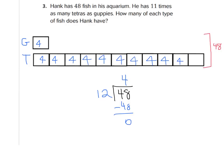And then we can figure out the answer. What is it asking? How many of each type of fish does Hank have? I know he has 4 guppies. And 11 groups of 4 would be 44 tetras. Does this make sense? It sure does. Because if we add our two totals together, 44 plus 4 does equal 48 total fish. All right, let's go on to question 4.